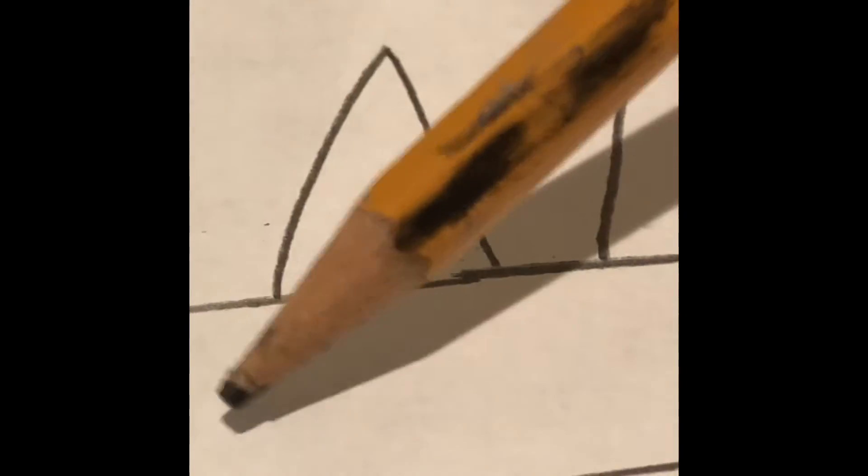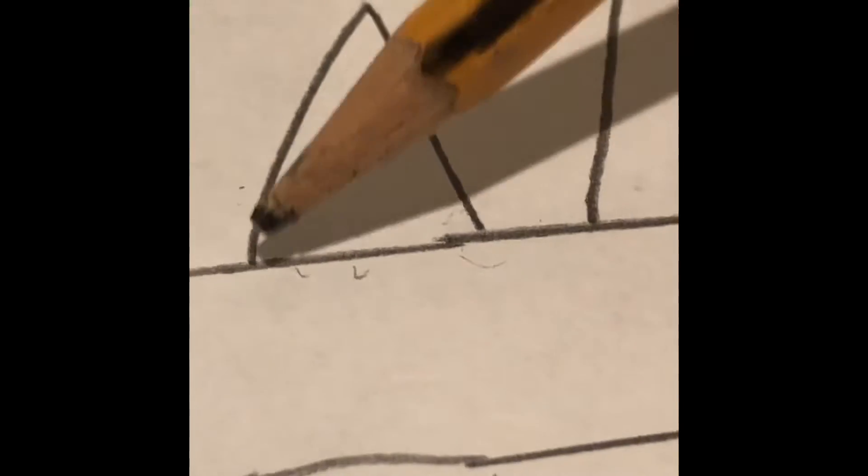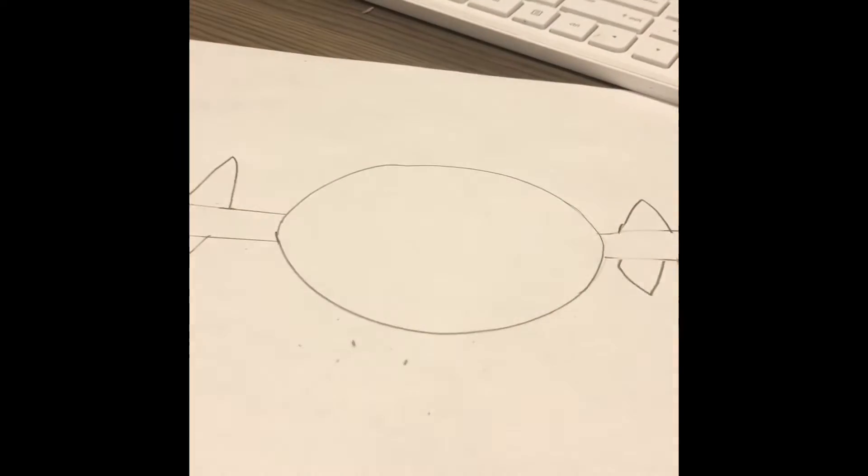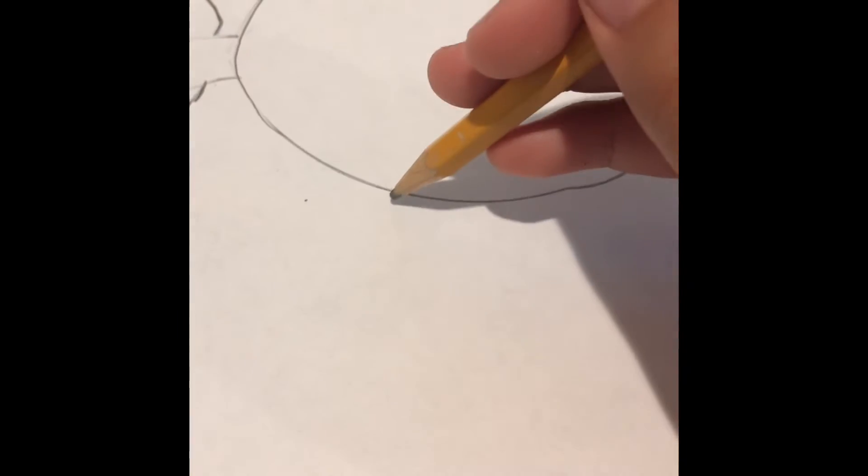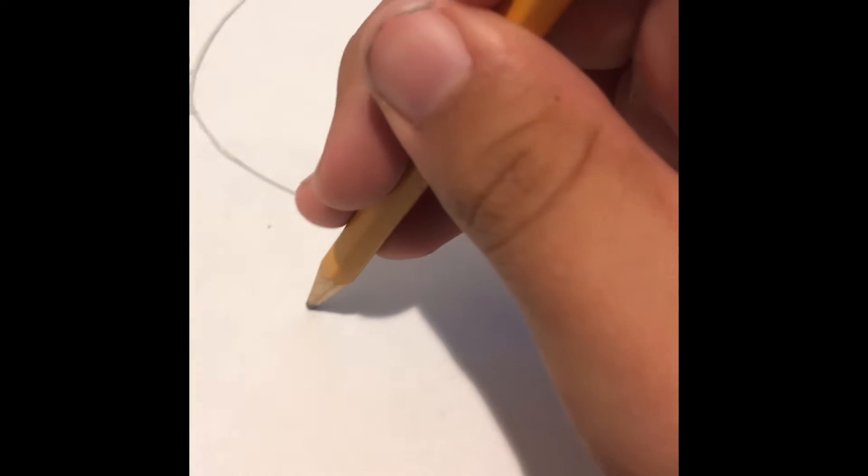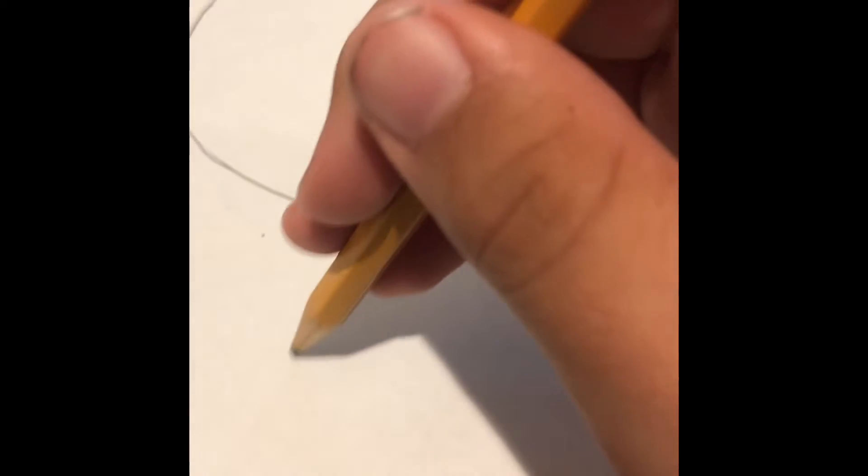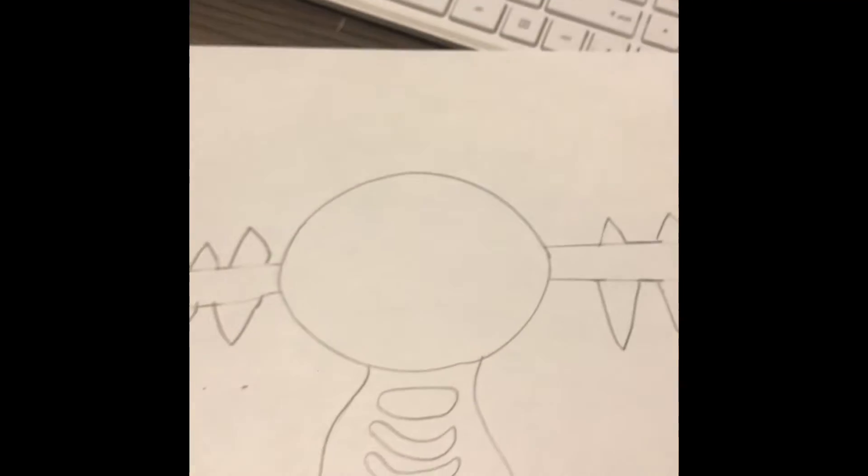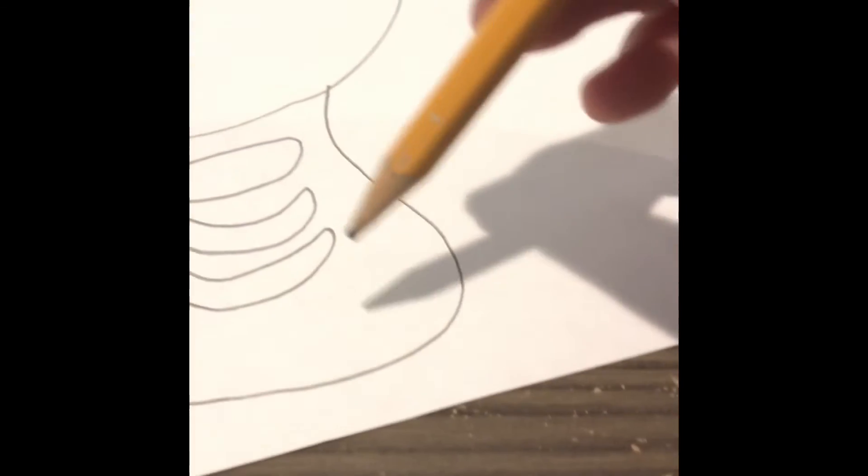You see this part here, this little line under that? Erase the lines under that. So now it should look like we have this. We're gonna draw the body. We're basically gonna do a curve kind of, it's gonna be like that. Then we should have this.